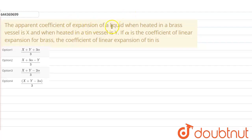Our question is: the apparent coefficient of expansion of a liquid when heated in a brass vessel is x, and when heated in a tin vessel is y. If alpha is the coefficient of linear expansion for brass, we have to find the coefficient of linear expansion for tin.